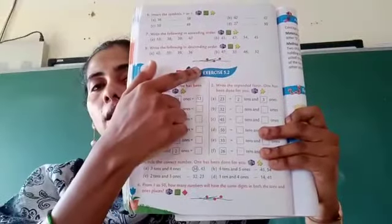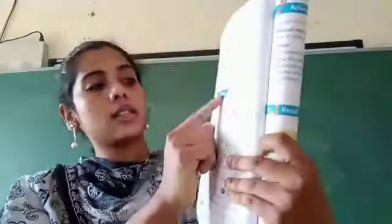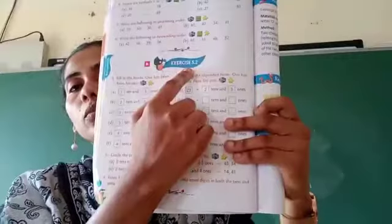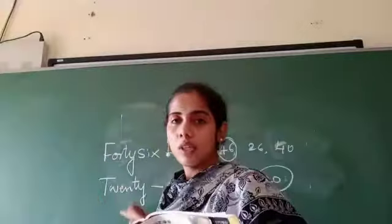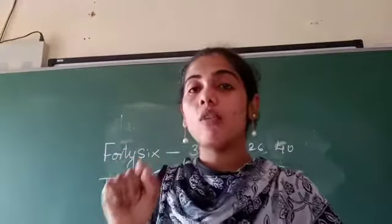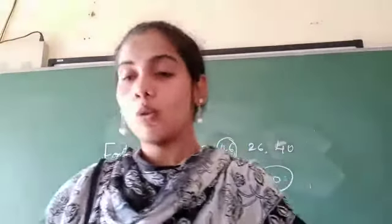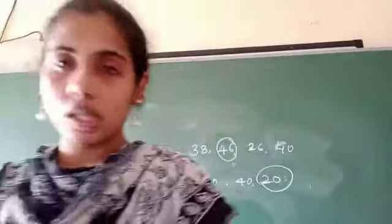Okay. You have to complete exercise, exercise five point two. Five point two. You have to complete this main and this main, this one. Okay. So, based on this video, you have to sit and complete page number one or two children. Okay.